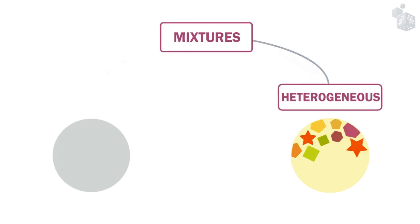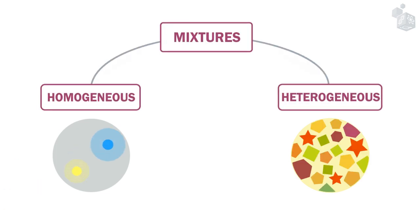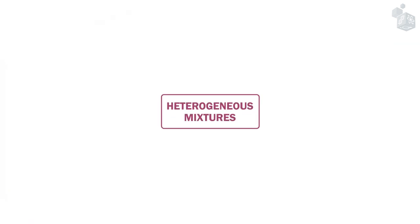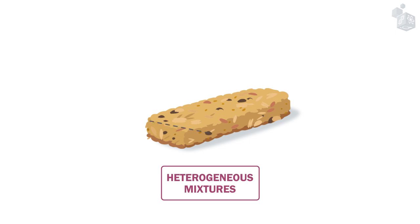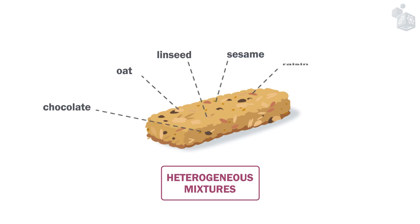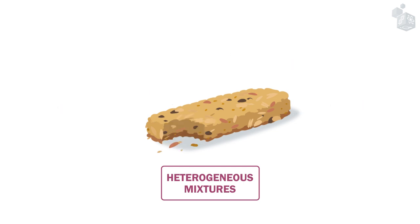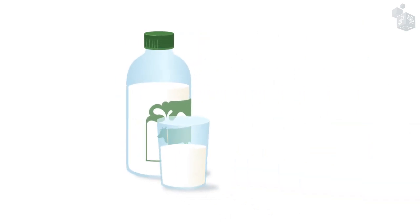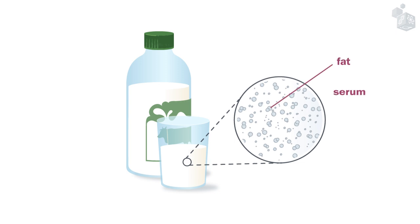Depending on their appearance, mixtures can be heterogeneous or homogeneous. The components in a heterogeneous mixture can be distinguished with the naked eye, and are not evenly distributed. The components in some of these heterogeneous mixtures can only be distinguished using a light microscope. This is the case of colloids.